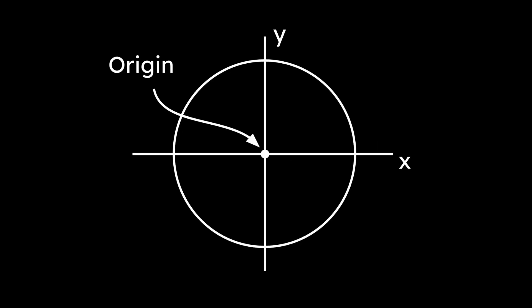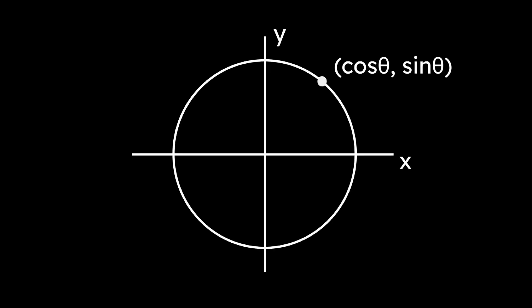But what if you want to use angles bigger than 90 degrees? This is what the unit circle is for. The unit circle is a circle centered at the origin with radius 1. Every point on the unit circle corresponds to cosine theta comma sine theta, where theta is the angle measured from the positive x axis.